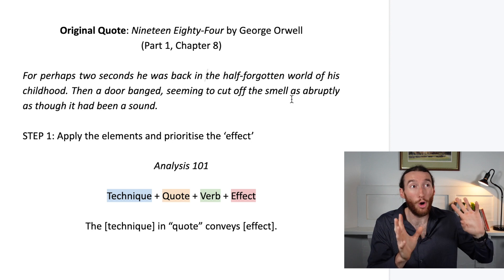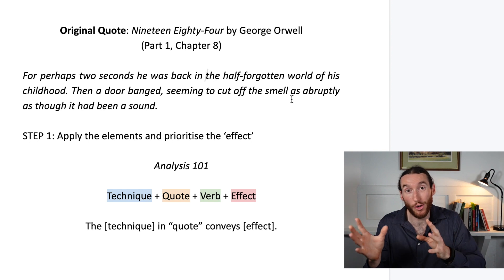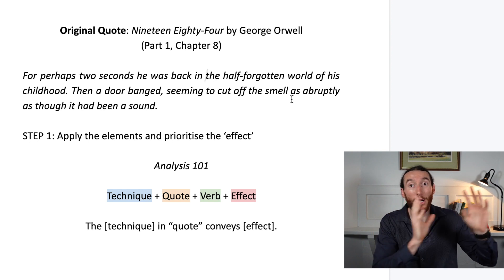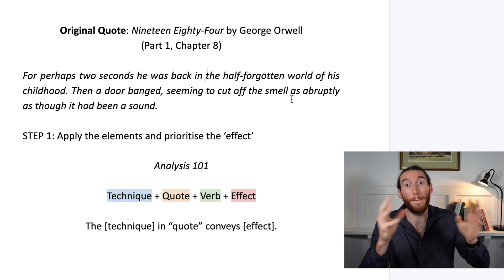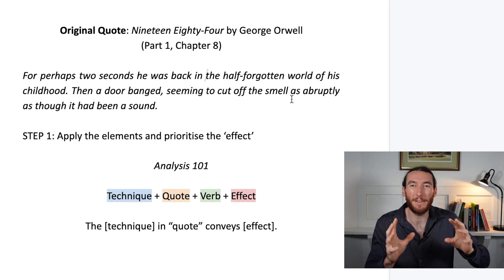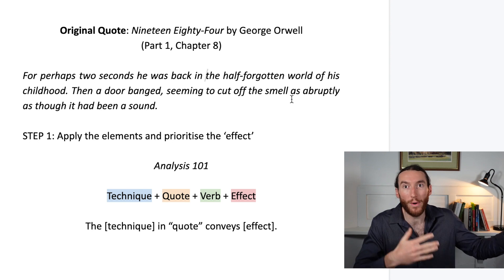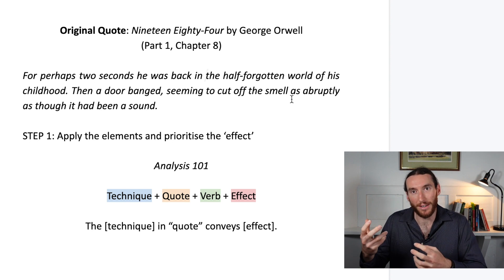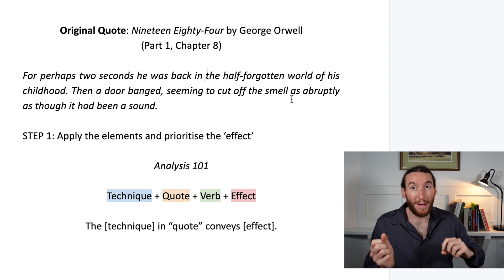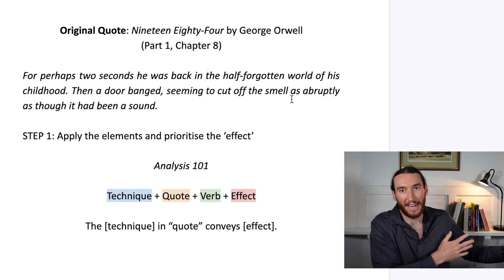People are forgetting who they used to be, their family, how things used to be — because Big Brother doesn't want any old world to compare the new world to, since the new world is not pretty. If you have an old world that looked a lot better, that might encourage you to resist and rebel against the current state. Whereas if you can't remember the old world, why would you feel the need to rebel? Maybe it's always been this way. So this quote is about the manipulation of reality, the manipulation of the past, shown through the uncertain memory of the protagonist.